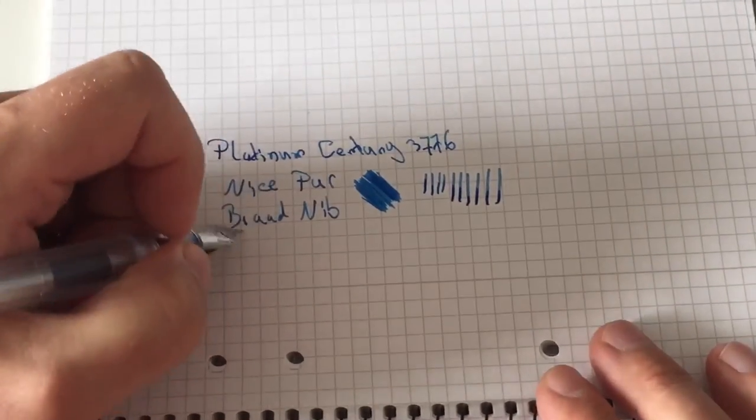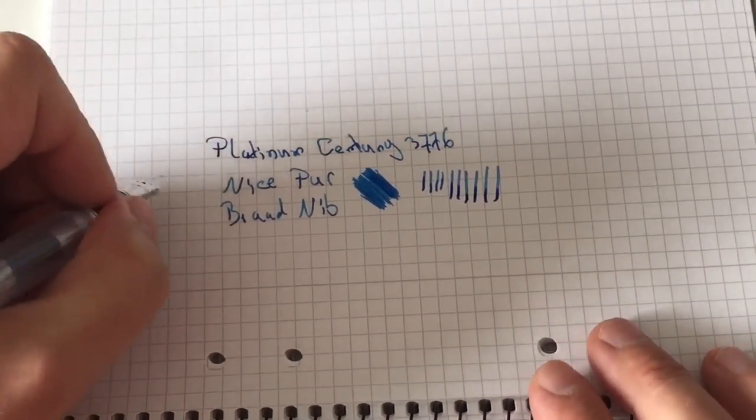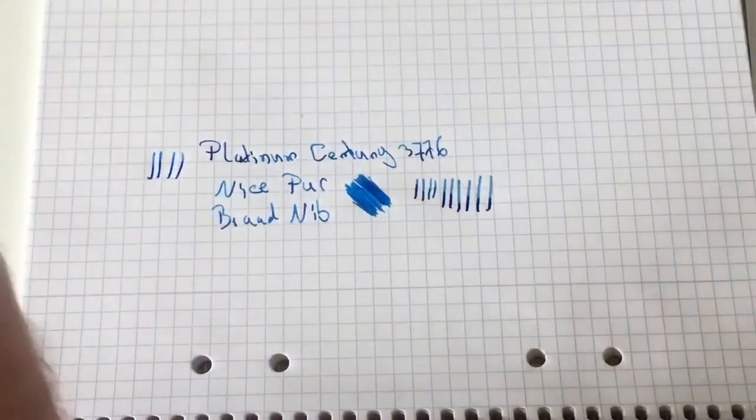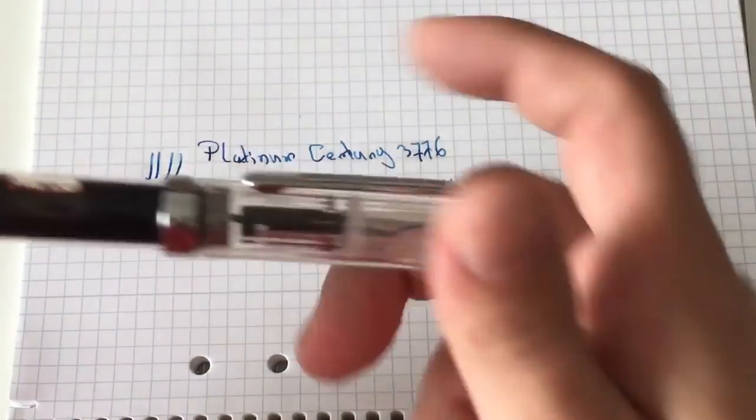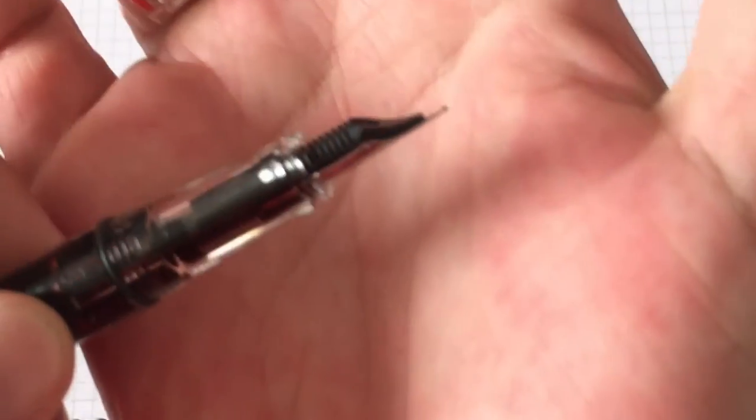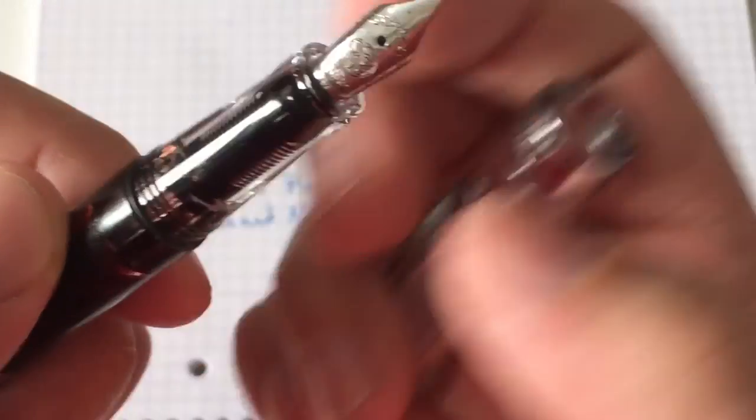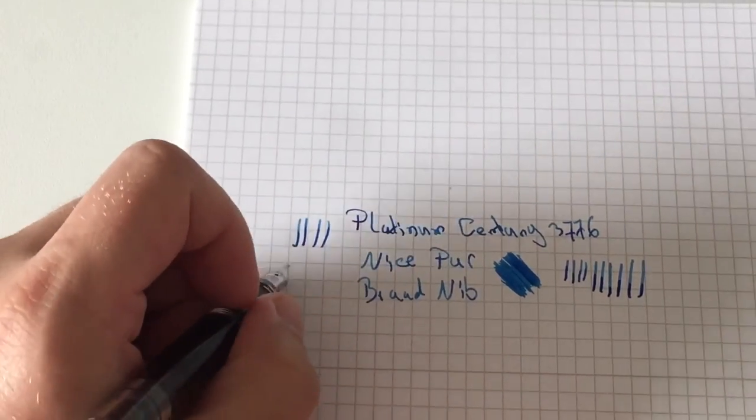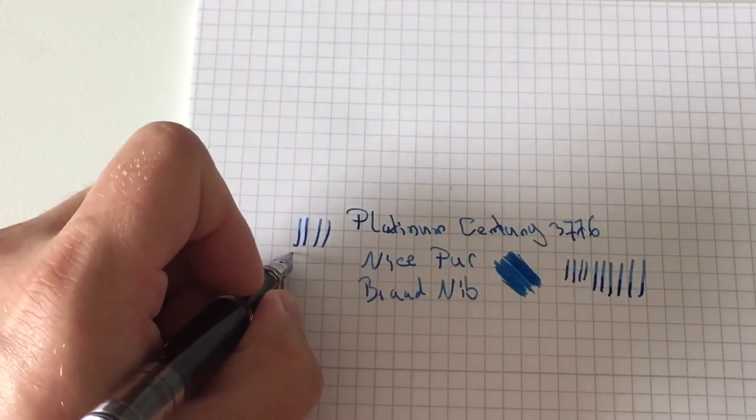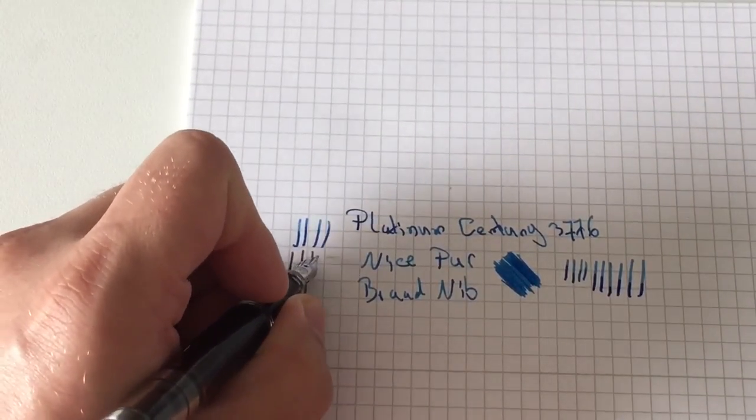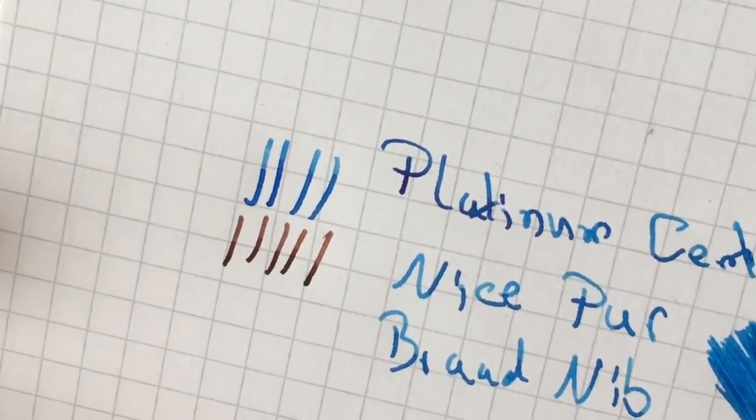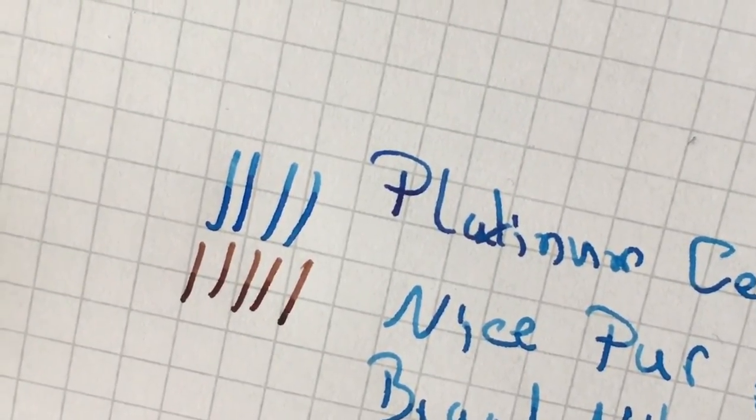As I said, this is a Japanese pen, so this is a Japanese broad nib. I have a TWSBI here—this is a TWSBI Eco with a medium nib. It says it here, and that compares more to a Western nib. This is now loaded with Faber-Castell Hazelnut Brown, and you see that is a pretty true Western medium nib. So this Western medium pretty much compares to the Platinum Japanese broad.